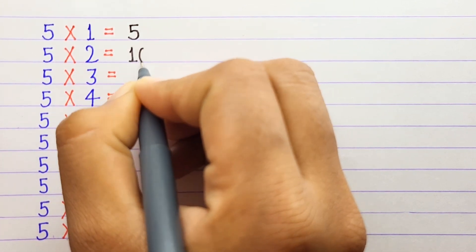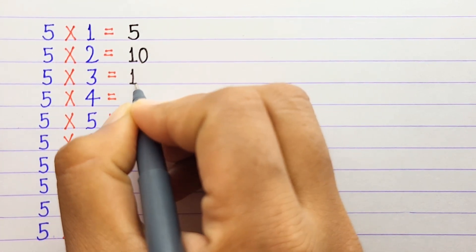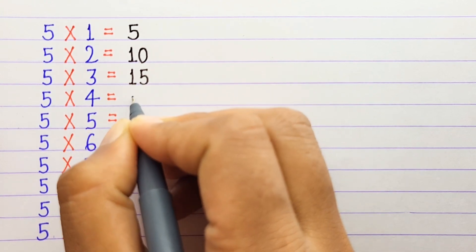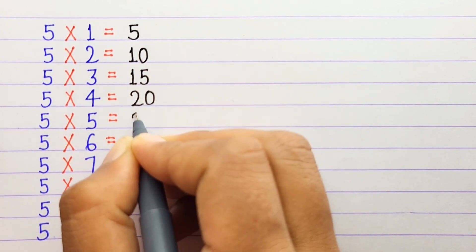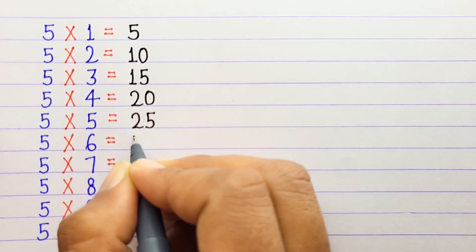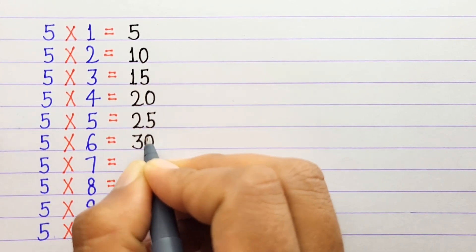5 times 2 is 10, 5 times 3 is 15, 5 times 4 is 20, 5 times 5 is 25, 5 times 6 is 30.